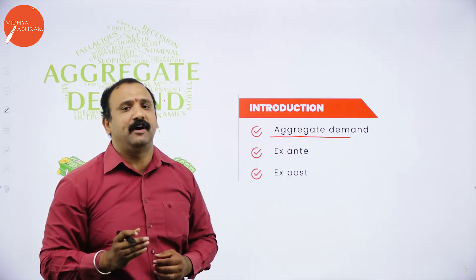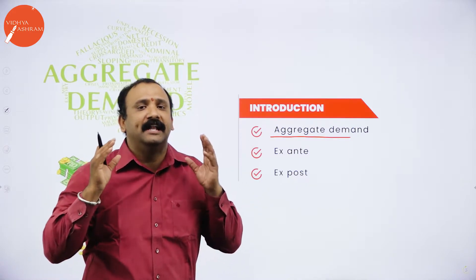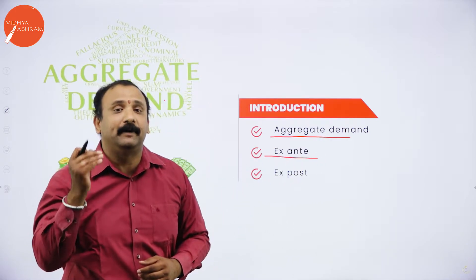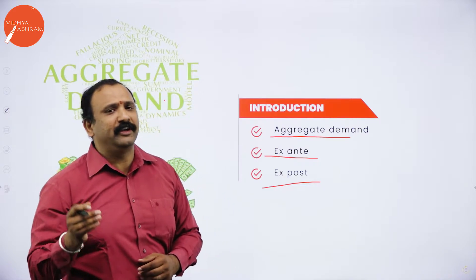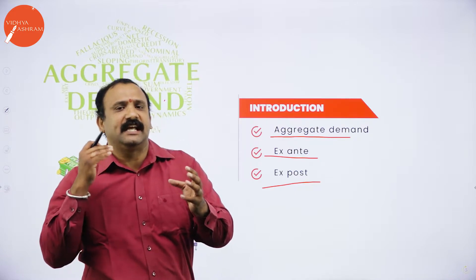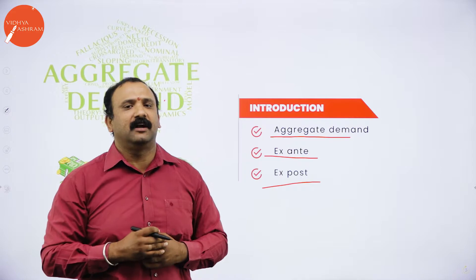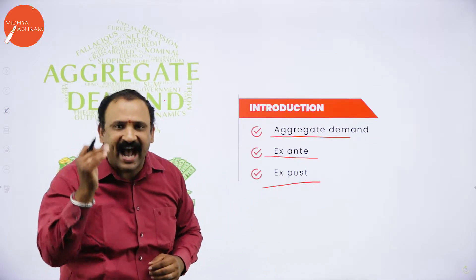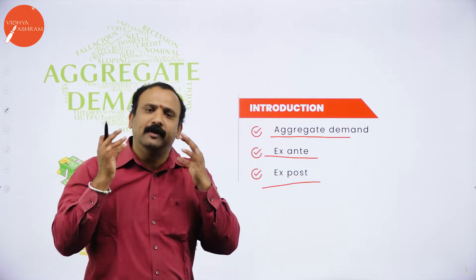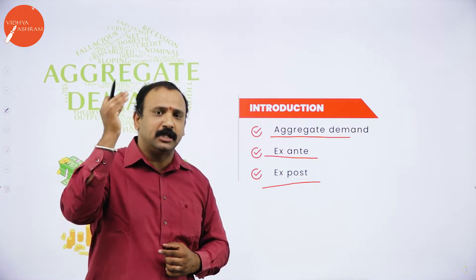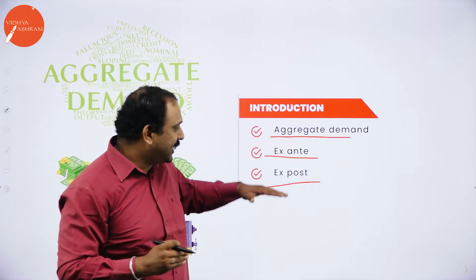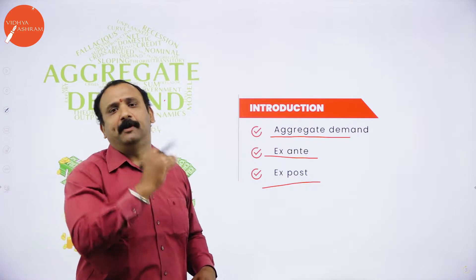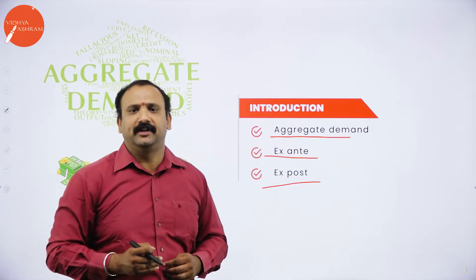Aggregate demand is a very important function that creates a cumulative effect in the economy. Next, we talk about ex ante and ex post. Ex ante is what has been planned and ex post is what has actually been done. In economics, functions like savings, consumption, and income are involved. Ex ante is what we decide we want to do, and ex post is what actually happens. Most of the time we plan — we decide how much to save — but then realize what we have actually done.